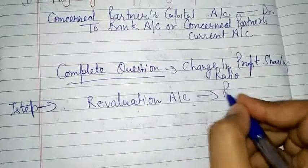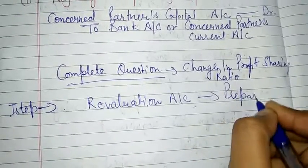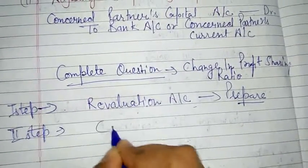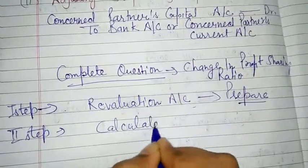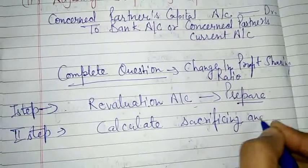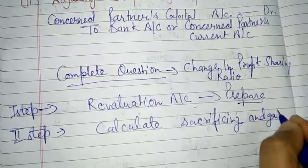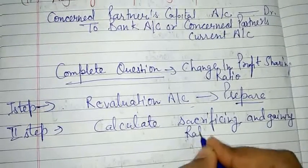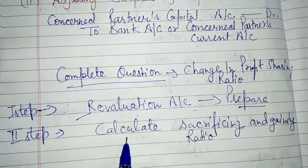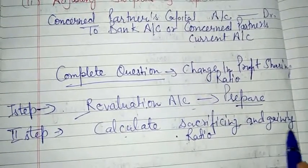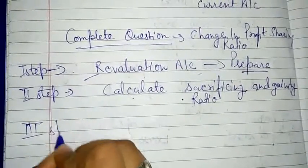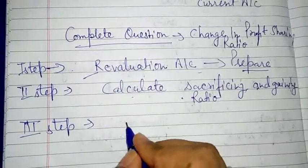First step: prepare the Revaluation Account, just as you normally do. After that, second step: calculate Sacrificing Ratio and Gaining Ratio. These two steps form the foundation before you proceed with further adjustments in the capital accounts.